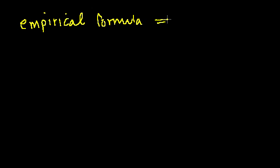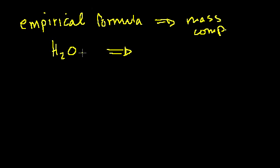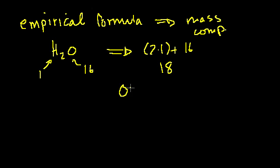A couple of videos ago, we figured out how to go from the empirical formula to the mass composition. What I mean by mass composition is that you could start with the empirical formula H2O, which is also its molecular formula, and then we were able to figure out what percentage was hydrogen and what percentage was oxygen. We said oxygen's mass is 16 atomic mass units, hydrogen is 1. The mass of the entire molecule is 2 times 1 plus 16 for that one oxygen, so it's 18. The composition of oxygen is just 16 over 18, which was something on the order of 88% or 88.9% oxygen.